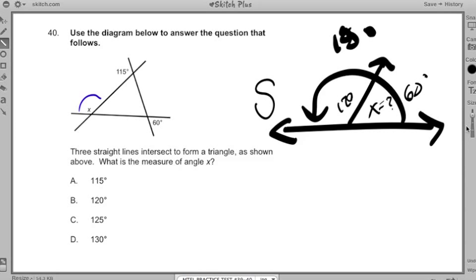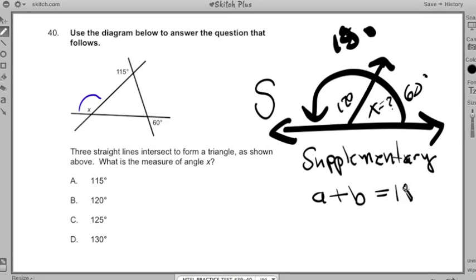Supplementary angles are two angles like A plus B that add up to 180 degrees. Remember that because supplementary forms a semicircle. That's one of our key math concepts that we're going to use to solve this.